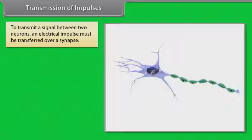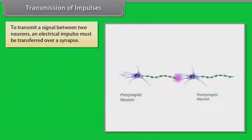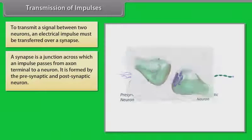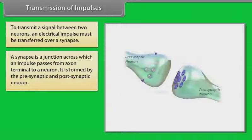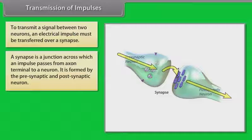To transmit a signal between two neurons, an electrical impulse must be transferred over a synapse. A synapse is a junction across which an impulse passes from the axon terminal to a neuron. It is formed by the pre-synaptic and post-synaptic neuron.